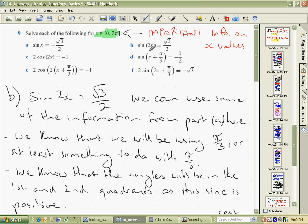What about this question here though? So here we've got a similar, sin of 2x though is equal to this. Well, again, we can look at this information so we'll look at something to do with π on 3 and we can use some of the information from that first part.